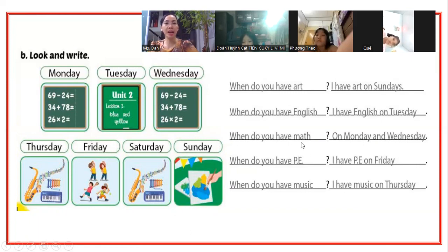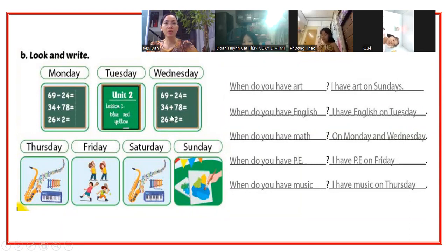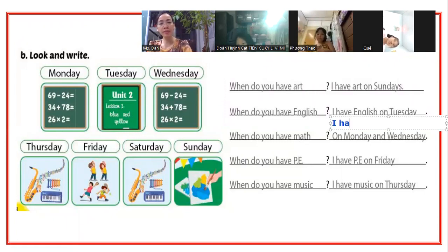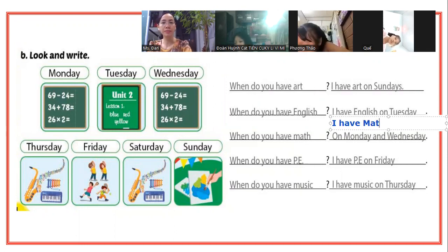Câu tiếp theo. When do you have art? Khi nào bạn có môn vẽ? Nếu bạn trả lời: I have art on Mondays and Wednesdays. Ai thiếu hàng thì các bạn viết lên phía trên nha. I have art on Mondays and Tuesdays.